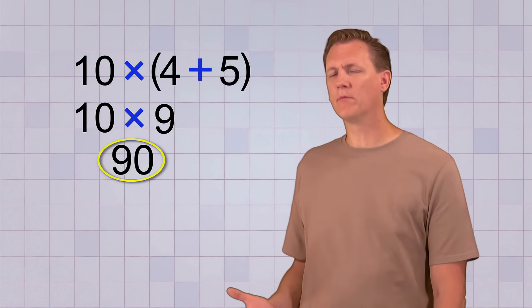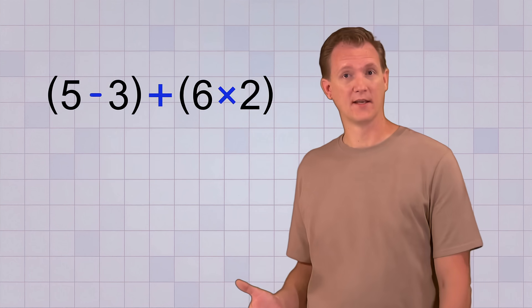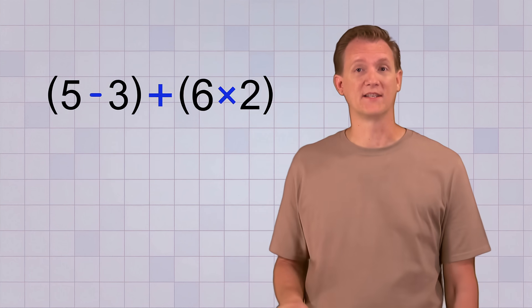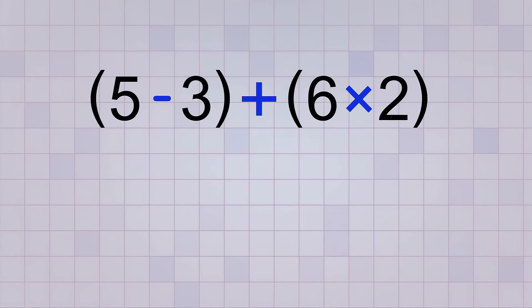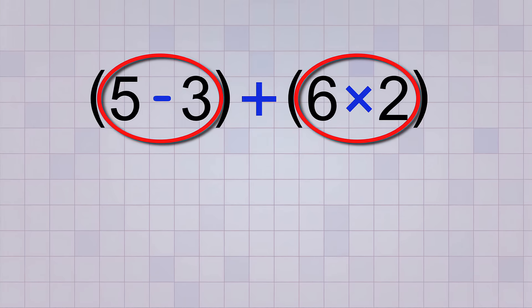But what if you get a problem that has more than one set of parentheses, like this? 5 minus 3 plus 6 times 2. Fortunately, it doesn't matter which set of parentheses you do first. You just need to do everything that's inside the parentheses before you do anything that's not inside parentheses.